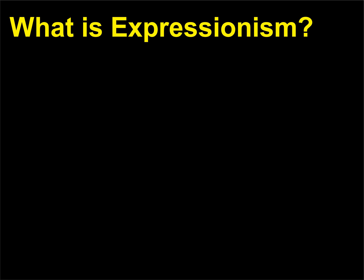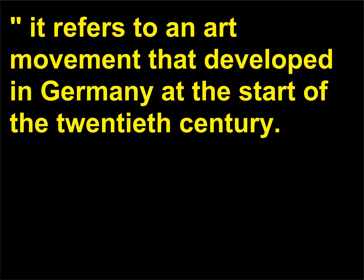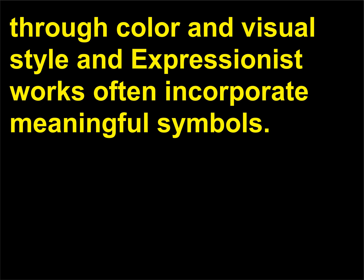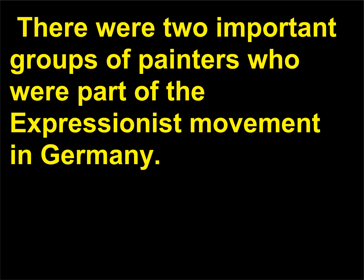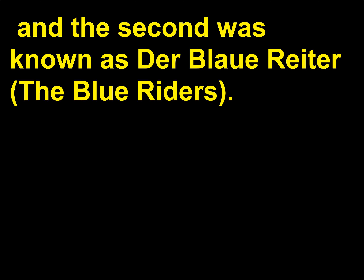What is Expressionism? The term expressionism is commonly used in the arts, but with a capital E it refers to an art movement that developed in Germany at the start of the 20th century. German Expressionism, like Fauvism, was concerned with communicating powerful feelings through color and visual style, and Expressionist works often incorporate meaningful symbols. There were two important groups of painters who were part of the Expressionist movement in Germany: the first was called Die Brücke (the Bridge), and the second was known as Der Blaue Reiter (the Blue Riders).